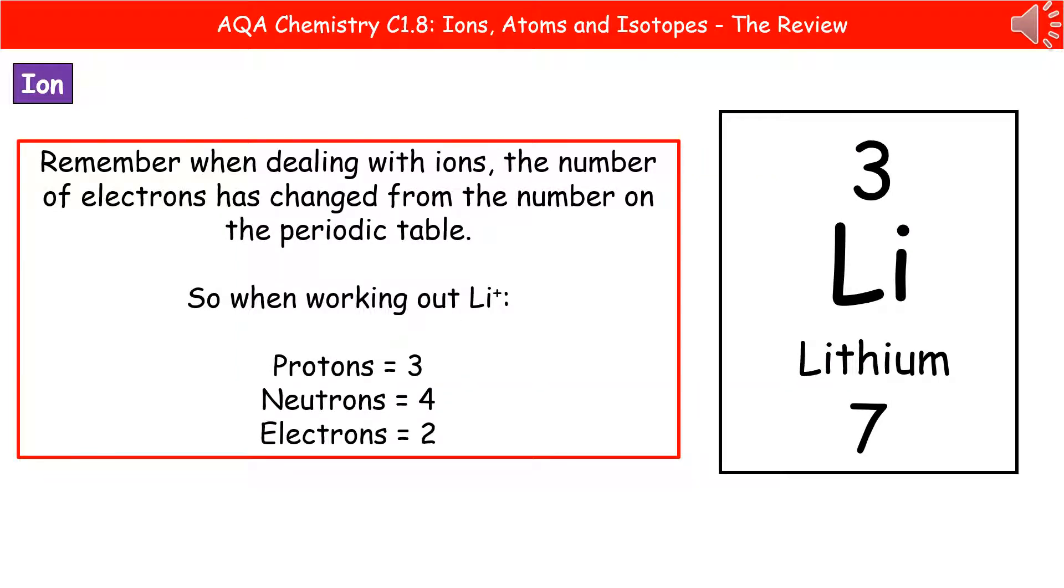In our previous video, we had a look at how we could work out the number of protons, electrons, and neutrons present in any atom from the periodic table. We do need to also be able to do this for ions. So if we think about our lithium, that's an Li+ ion, then what we actually find is that the one number that will change is the number of electrons. So we can still work out our protons and neutrons the same as we did before.